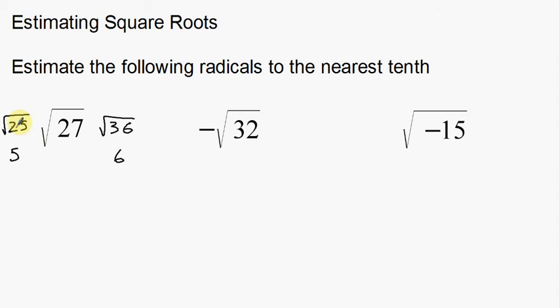Looking at this number, 25 to 27, there's only two digits difference right there. 27 and 36, that's nine digits of difference. So the square root of 27 is going to be pretty far away from the square root of 36, and the square root of 27 is actually going to be pretty close to the square root of 25. So I'm going to estimate this to one decimal place as about 5.2.